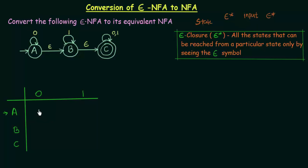Let us fill in the column for state A on input 0. The procedure is: first find the Epsilon Closure of A, then check where those states go on input 0, then take the Epsilon Closure again. The Epsilon Closure of A is A, B, and C — we already established that. So A goes to A, B, and C via Epsilon.